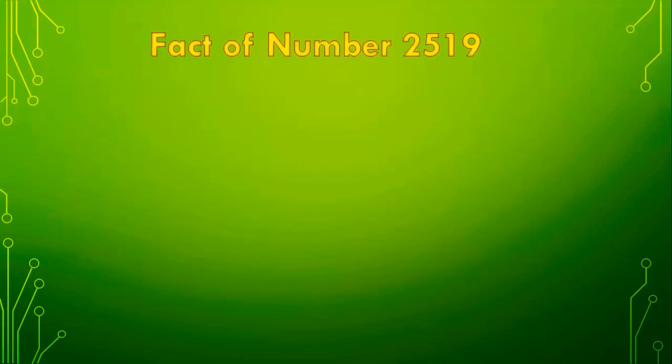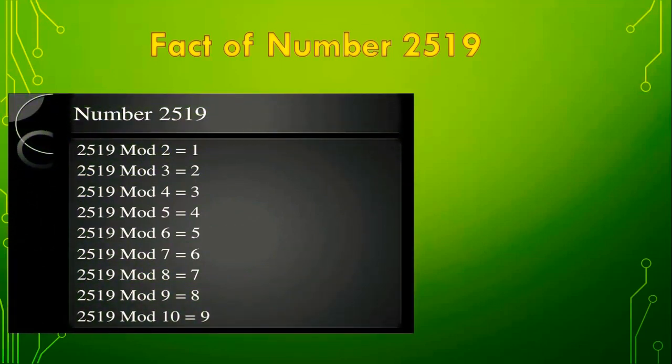Next, a fact about the number 2519. This is also a very interesting number — just remember 2519. When you divide 2519 by 2, you get the remainder 1. Here, 'mod' is a concept for division which you will study in higher classes. But it simply means divided by. 2519 divided by 2 gives remainder 1.